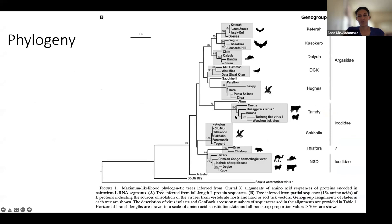This is just a quick look at the phylogeny of the family, with Crimean-Congo hemorrhagic fever on this branch over here. You can see there's quite a lot of diversity in terms of the animals these viruses infect, as well as the types of ticks that transmit them. For those interested in host-virus interactions, that's something important to pay attention to.